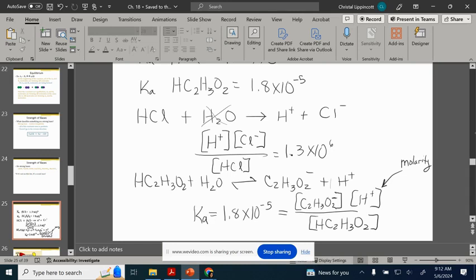And the bigger this Ka value is, the stronger the acid it is. So if I had one that was like 1.5 times 10 to the negative 7, that would be a weaker acid than this guy. So Ka indicates the strength of that acid.